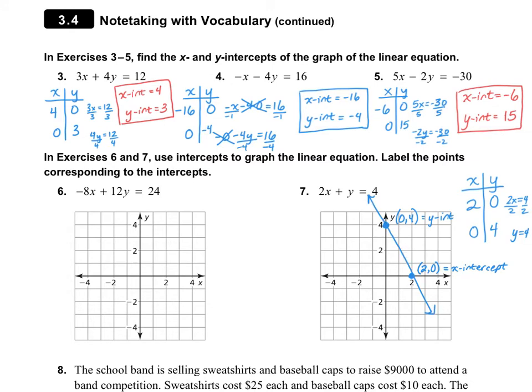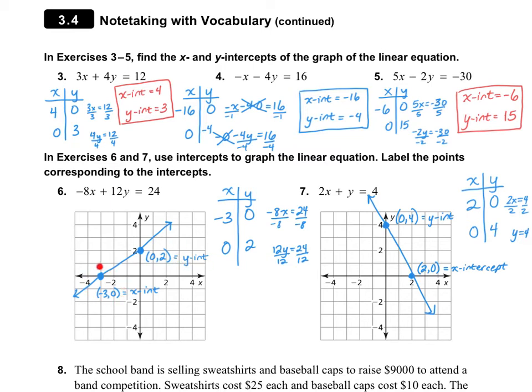I would like for you to try number 6 on your own. Pause the video and then turn it back on when you're done. For number 6, I got (0, 2) as my Y-intercept and (negative 3, 0) as my X-intercept.